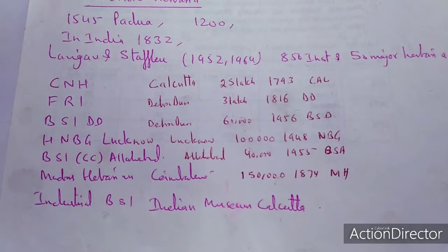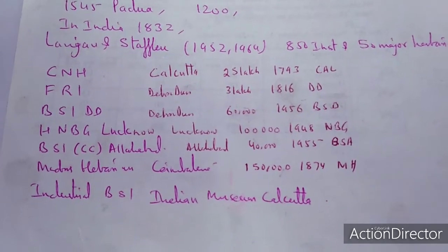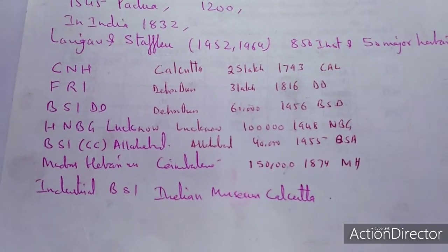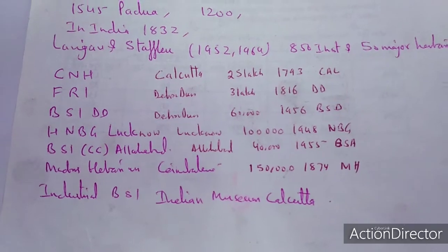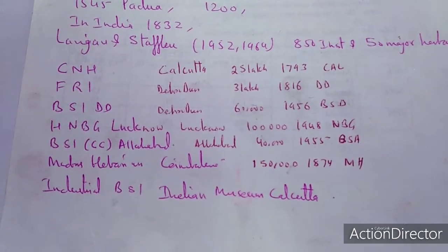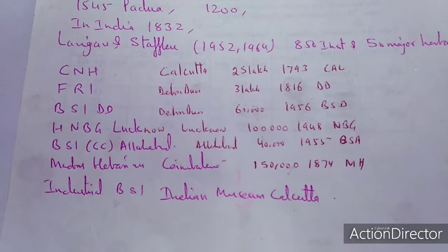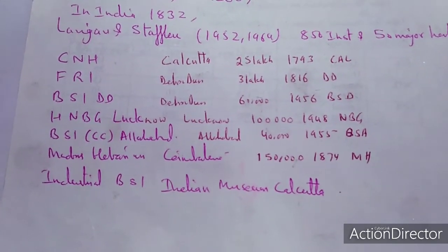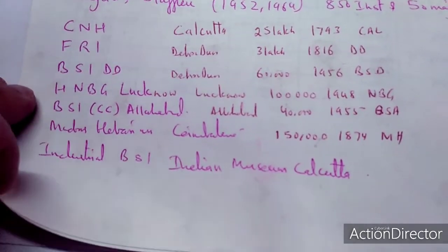For example, the Central National Herbarium at Calcutta, the Forest Research Institute at Dehradun, BSI Dehradun, HNBG, the NBRI Lucknow Herbarium, BSI Central Circle, Allahabad Herbarium, Madras Herbarium, Coimbatore, as well as the industrial section of BSI at the Indian Museum, Calcutta.